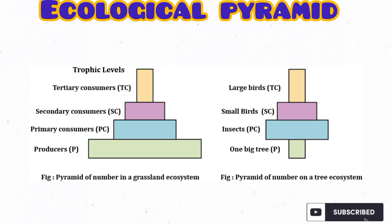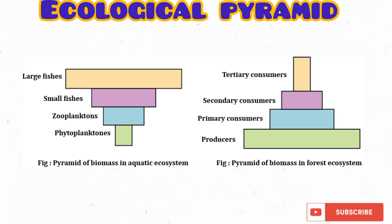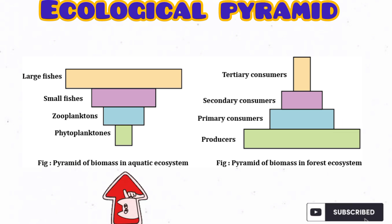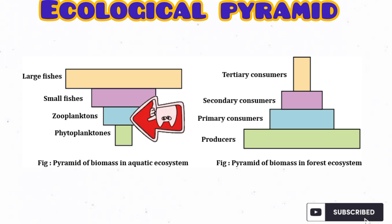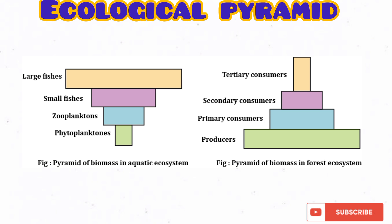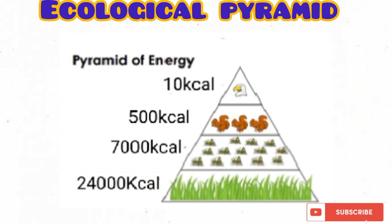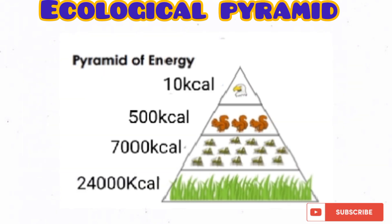Also note that the pyramid of biomass does not always have a larger base. The pyramid of biomass in a terrestrial ecosystem does have a larger base. But in an aquatic ecosystem, we have a smaller biomass of phytoplankton sustaining a larger biomass of zooplankton. However, in the case of pyramid of energy, it always has a larger base — please take note of this.